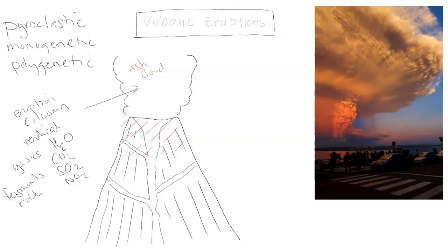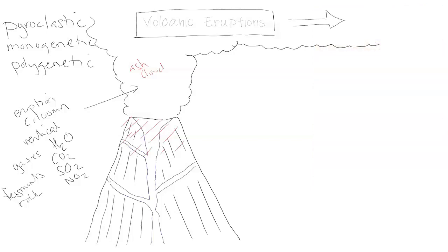It billows out like a massive mushroom cloud until it reaches the stratosphere, where it starts to accumulate and move due to the stronger prevailing winds — depending on the latitude of the volcano. You start to get the heavier particles, the heavier pyroclastic material, starting to fall back to Earth due to gravity.